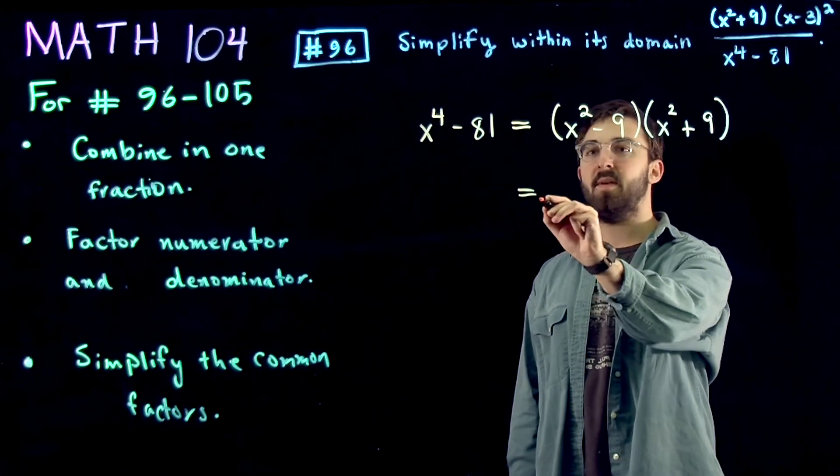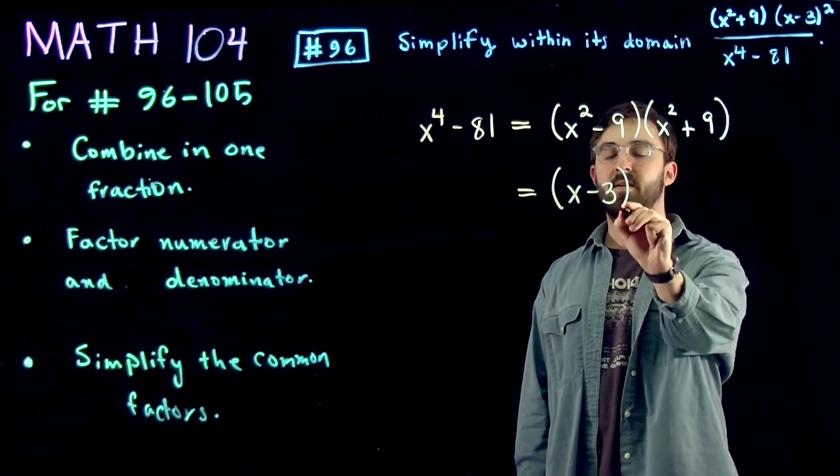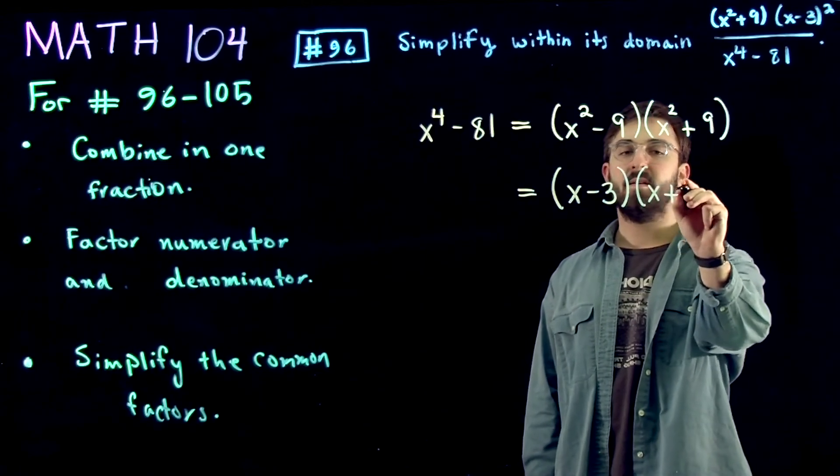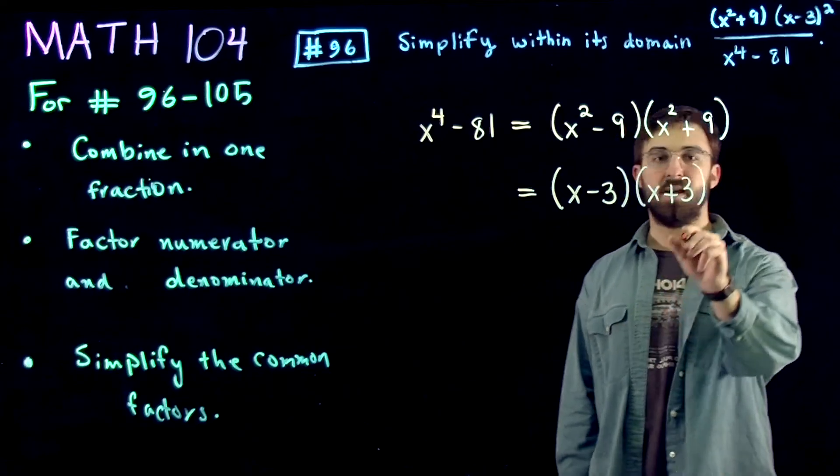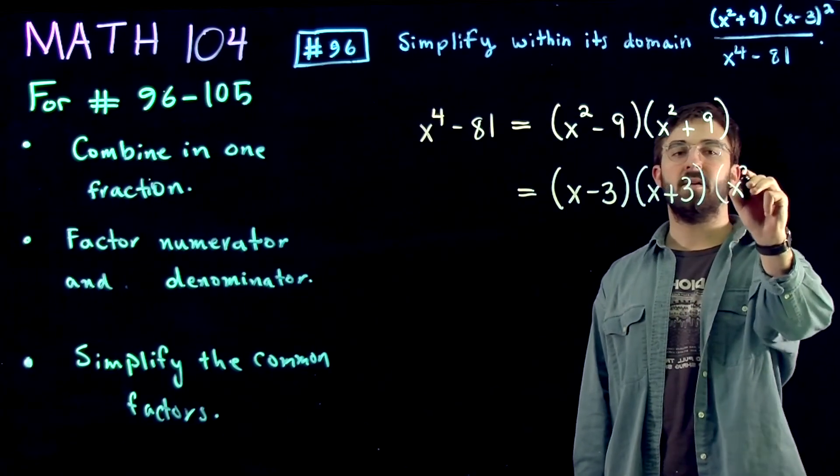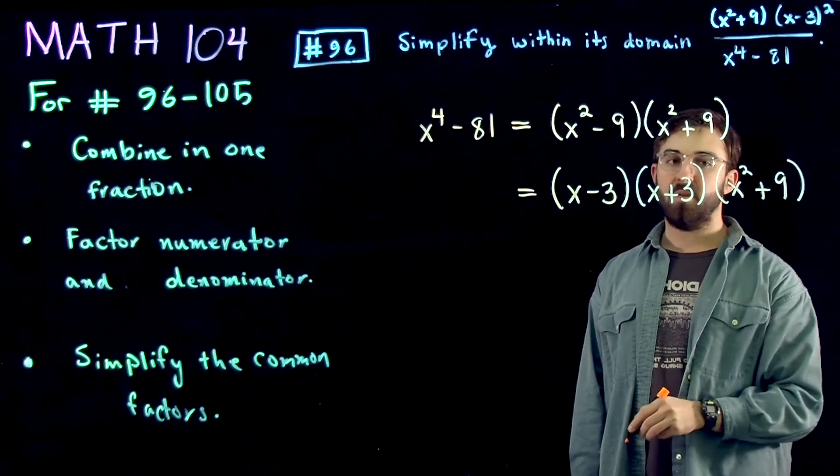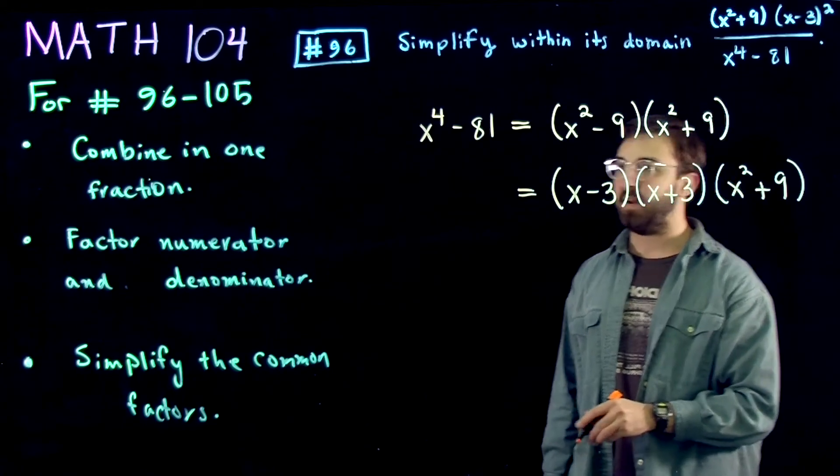So from this, we can do x minus 3 times x plus 3, and x squared plus 9 just stays. So you've got x squared plus 9. Now this is the denominator completely factored.